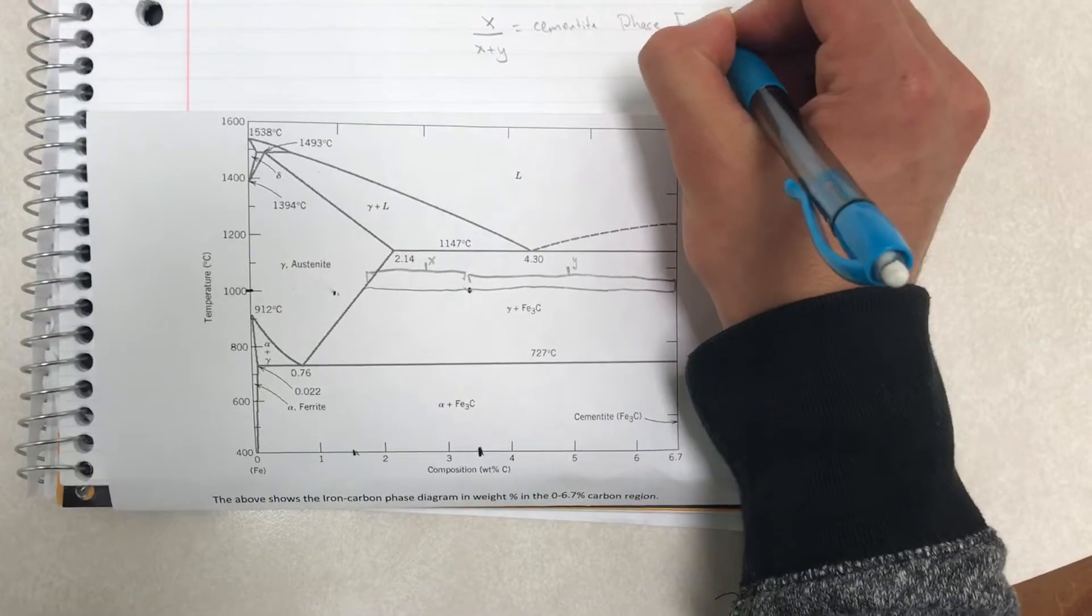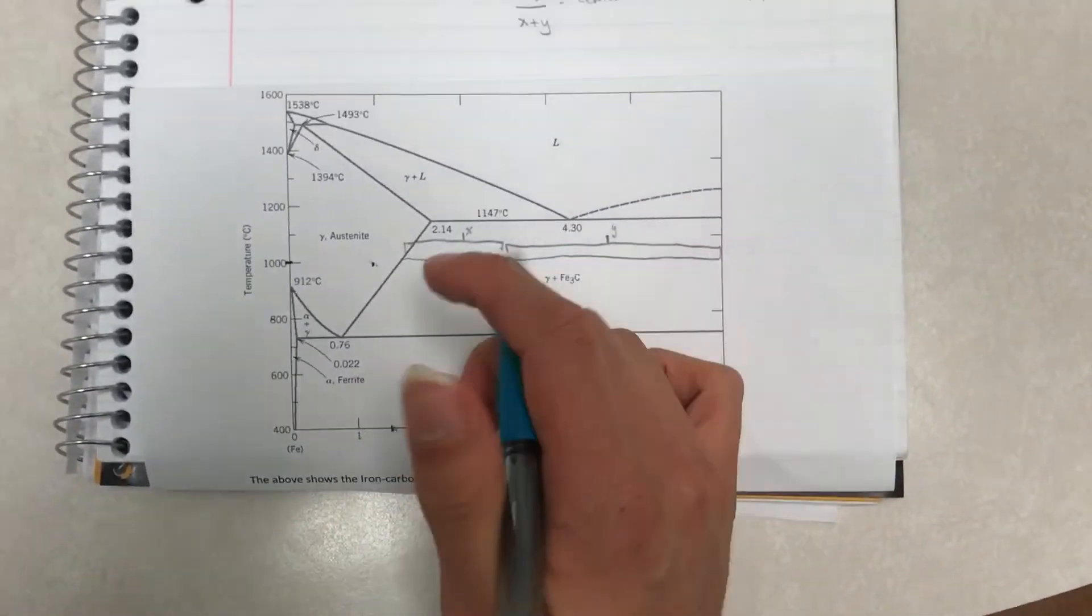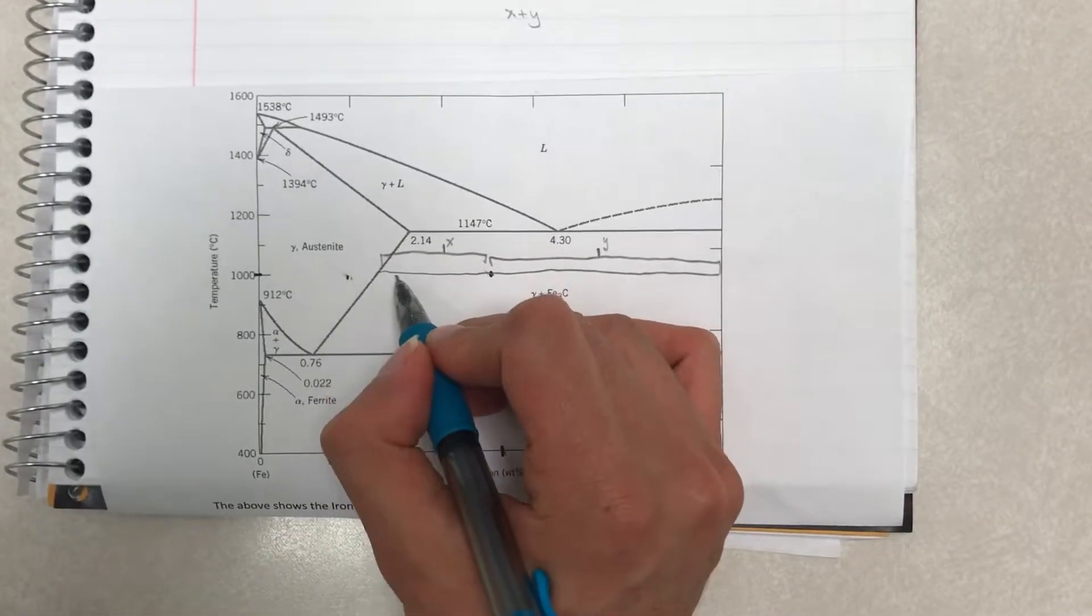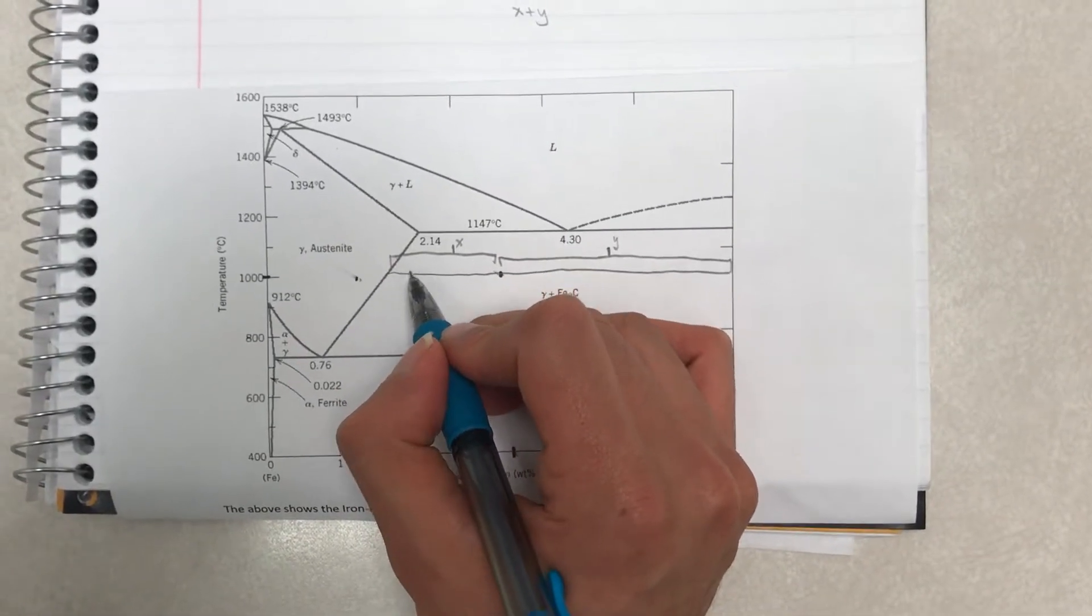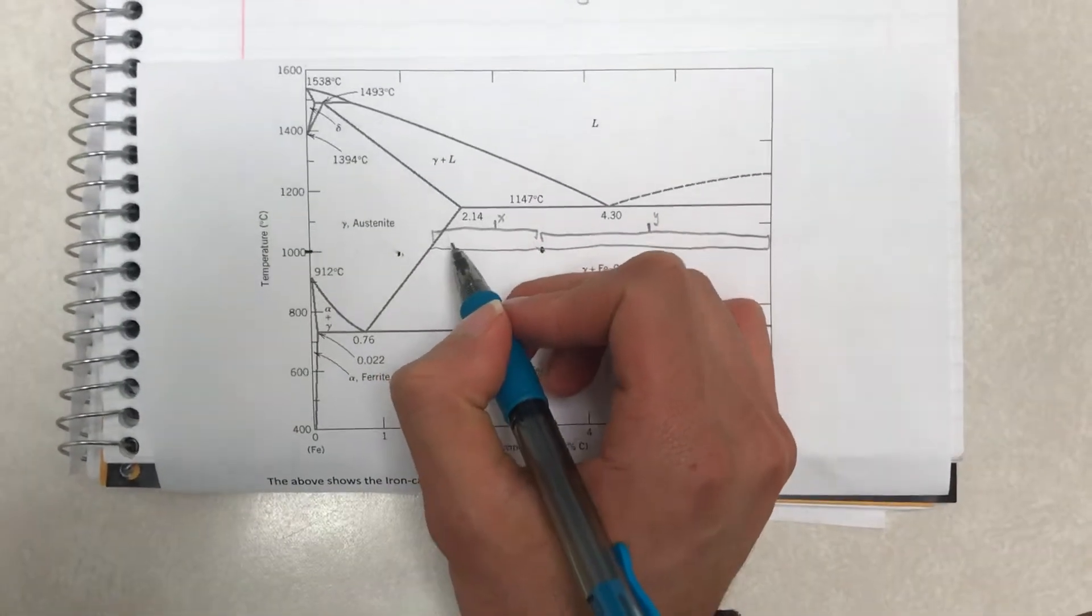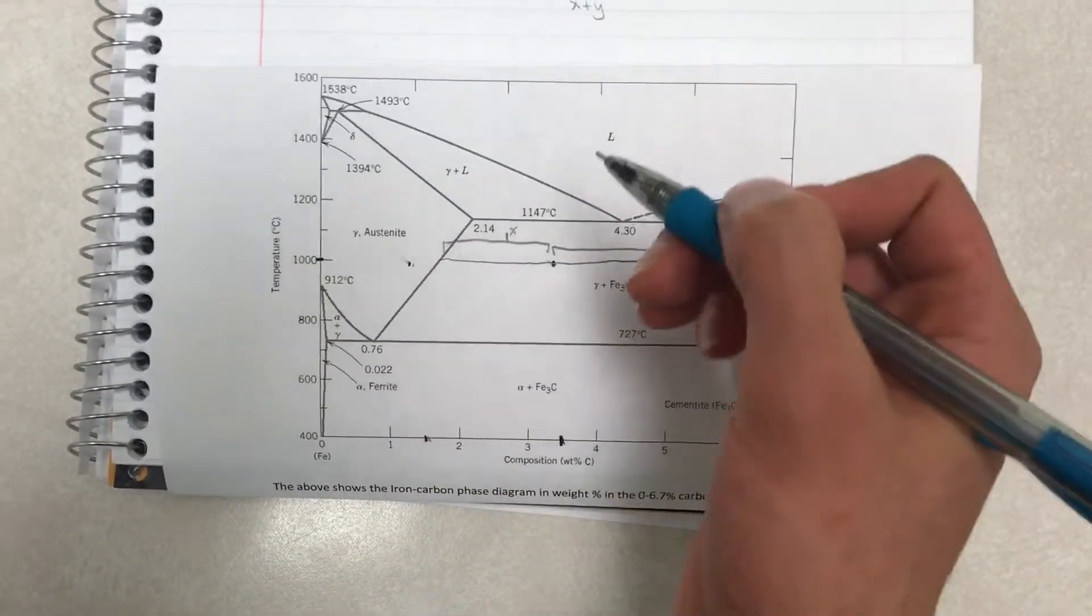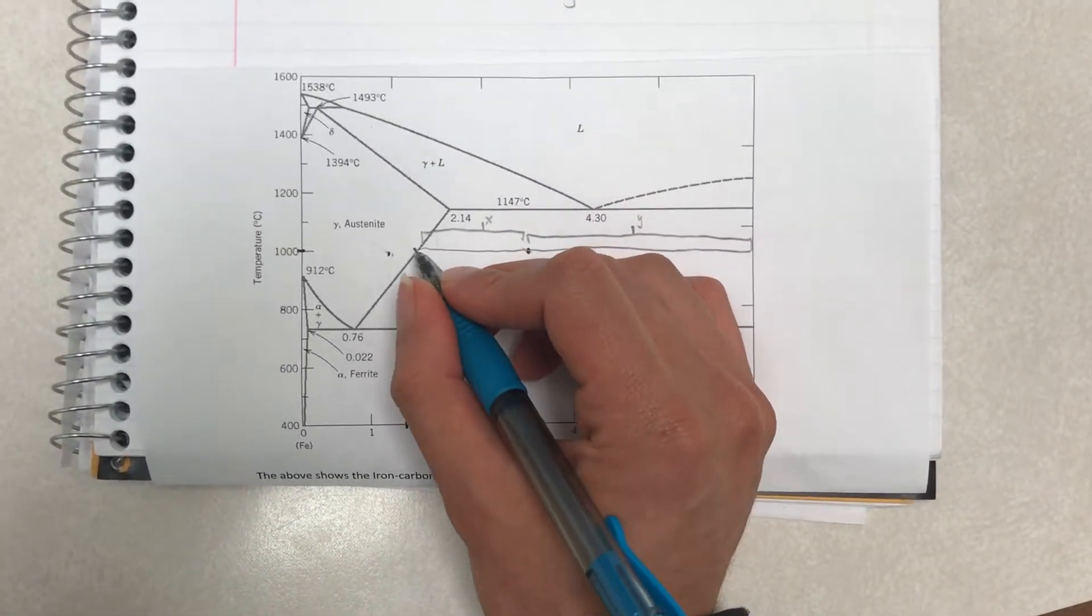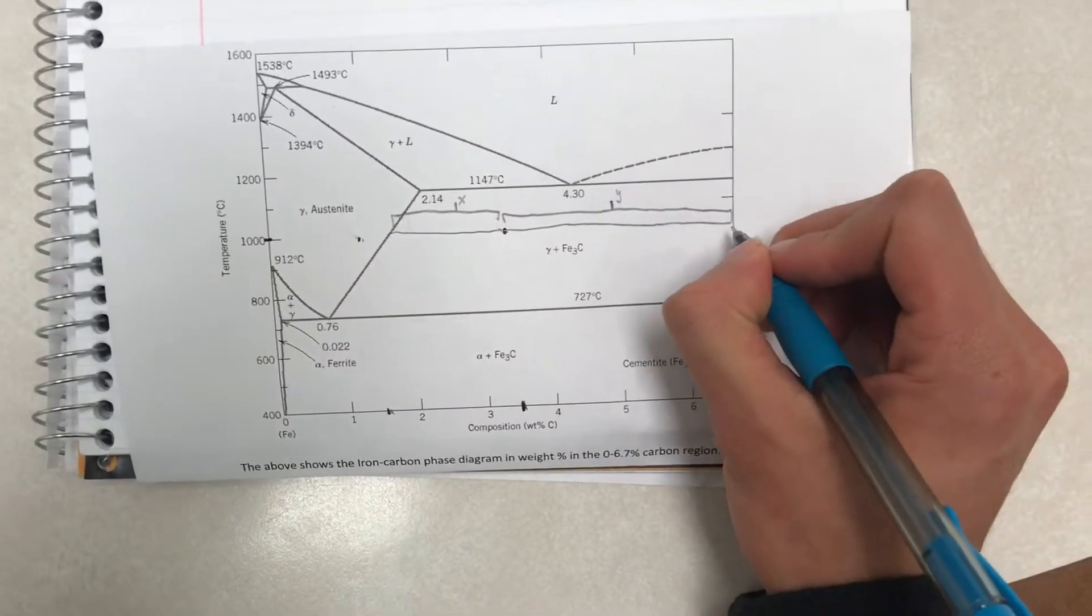Now I want you to think about that instead of just blindly following the equation. So say the point was right over here, right? It's closer to the Austenite phase. And if this whole area like that was y, and that was x, y over x plus y would be closer to 1. So the phase fraction would be almost 100%, and doesn't that make sense since it's so close to Austenite?